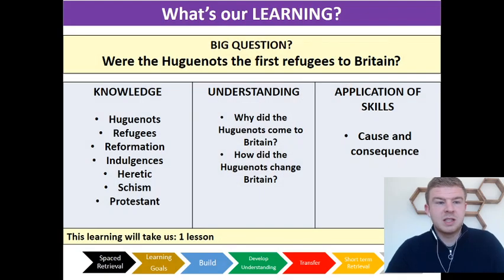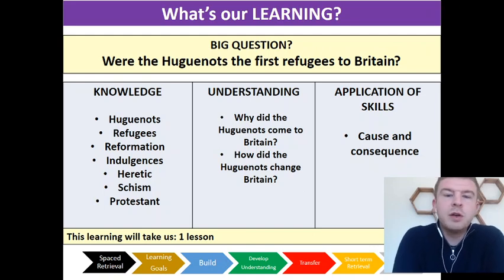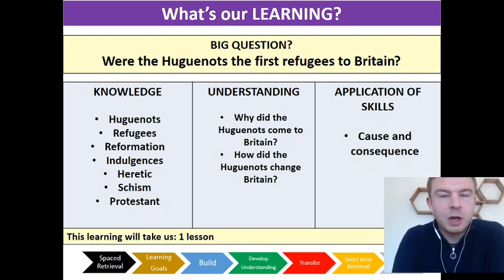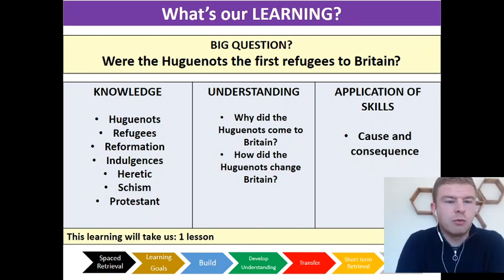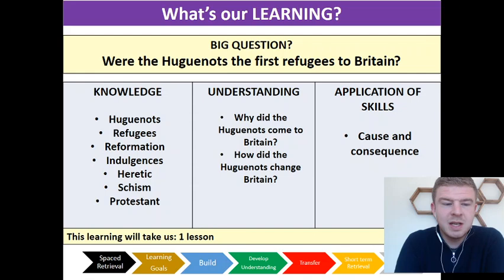We're going to look at a group who came over from France called the Huguenots, that came over to Britain in the late 16th century and onwards. The big question for today's lesson is: were the Huguenots the first refugees to Britain? And these are our key words that we're going to come back to at the end of the lesson: Huguenots, refugees, reformation, indulgences, heretic, schism and protestant.